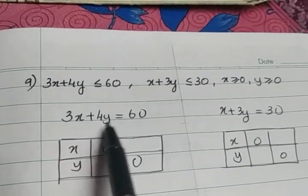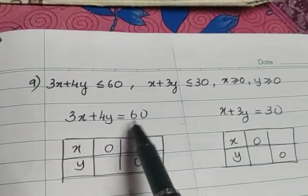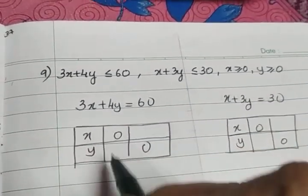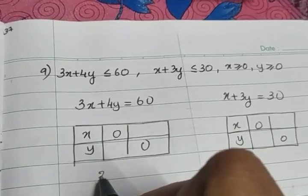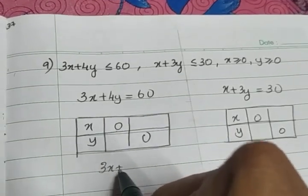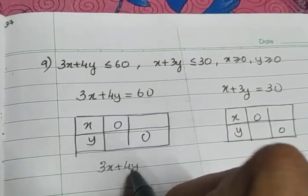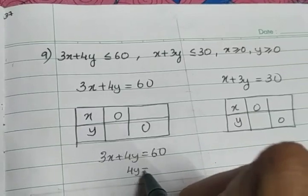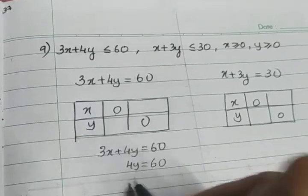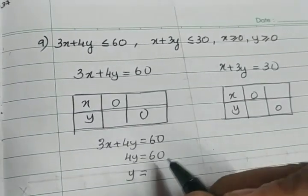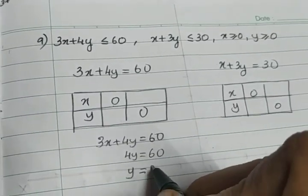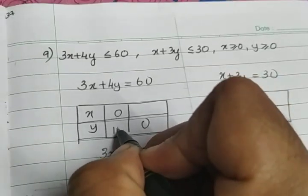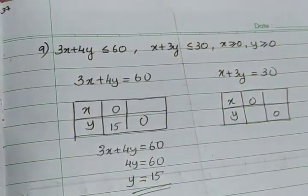Taking the equation 3x plus 4y equal to 60, I am going to find two points. When x takes the value 0, the equation becomes 4y equal to 60, so y is equal to 60 divided by 4, giving you 15. So one point is (0, 15).